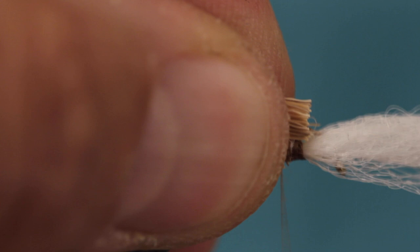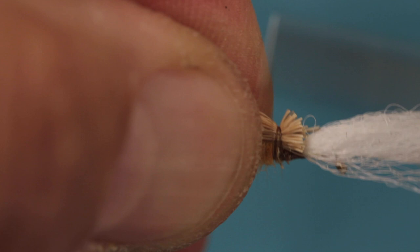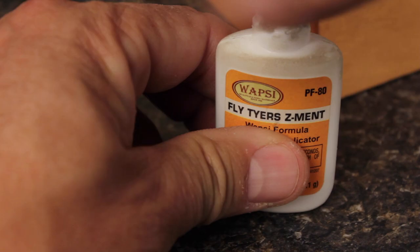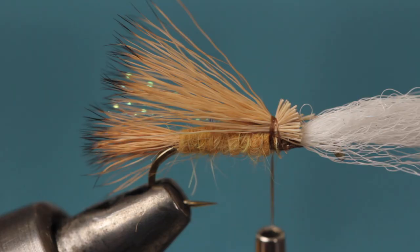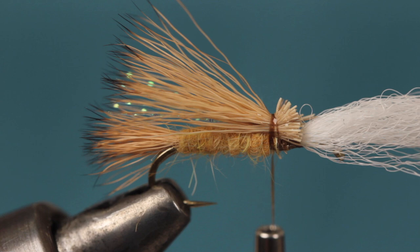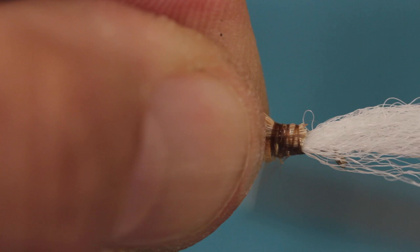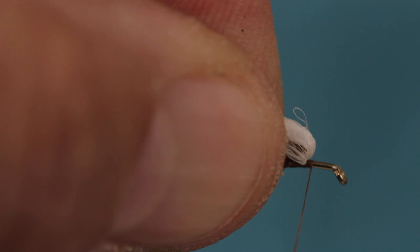Use tight wraps to secure the wing to the top of the hook shank so it looks something like this. A small amount of super glue applied to the butts and the thread wraps works wonders in terms of keeping the wing locked into place. Elk hair that rotates around the hook shank or pulls out is no fun at all. Sweep the wing post up and back and take wraps in front of it leaving an eye length space behind the eye. This will be the hackle tie in point.